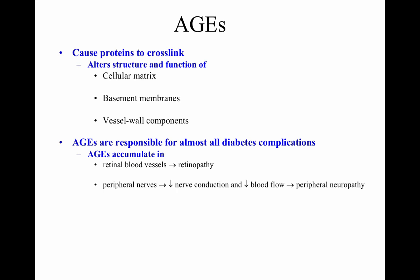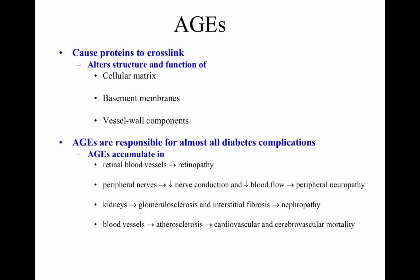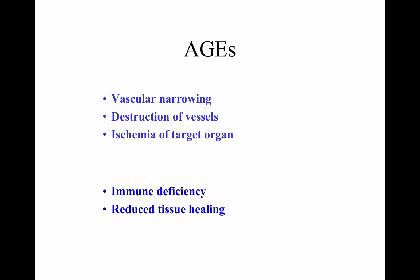AGEs accumulate in retinal blood vessels causing retinopathy; in peripheral nerves decreasing nerve conduction and blood flow leading to peripheral neuropathy or pain; in the kidneys causing glomerulosclerosis, scarring of the glomeruli, interstitial fibrosis, and nephropathy. In blood vessels, atherosclerosis or scarring of the arteries can lead to cardiovascular and cerebrovascular mortality. AGEs produce vascular narrowing, destruction of vessels, ischemia or death of target organs, immune deficiency, and reduced tissue healing.